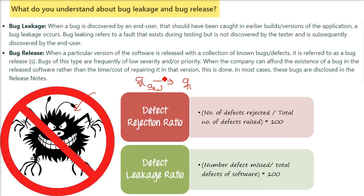Bug leakage refers to a fault that exists during testing but was not discovered by the tester or software team, and is subsequently discovered by the end user. What is bug release?